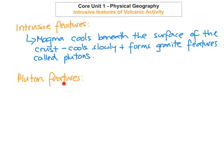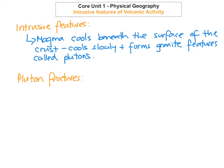So these pluton features — how do we actually see them? How do we reveal them if they're below the Earth's surface? One of the ways they can be revealed is because of tectonic uplift. The second way is when the overlying rocks are removed because of denudation — basically because of erosion and weathering — and then these pluton features can be revealed.